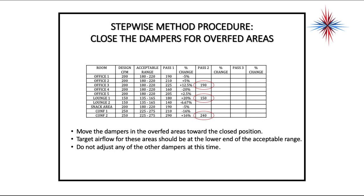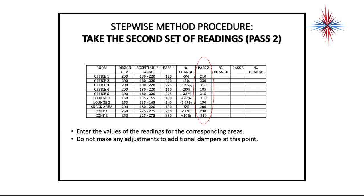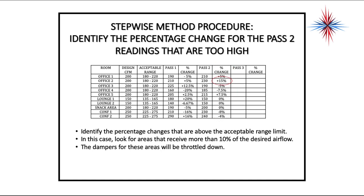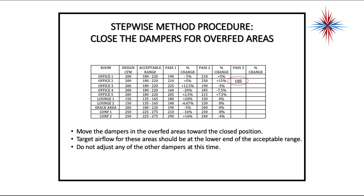Take a second set of readings — Pass 2. Enter the values for each area without making additional adjustments. Calculate the percentage of change again. Notice that a lot of things have started to line up. There's now one value still outside range: Office 2 is at 15%, outside my 10%. Throttle that damper down, targeting the lower end of the acceptable range. Leave everything else alone, because you really won't need to touch those.